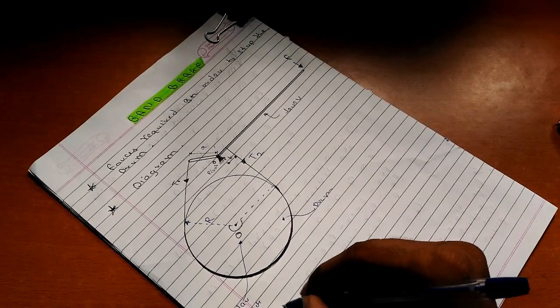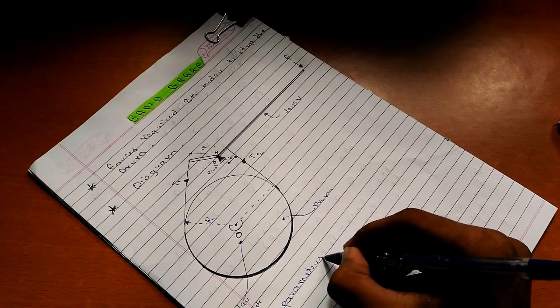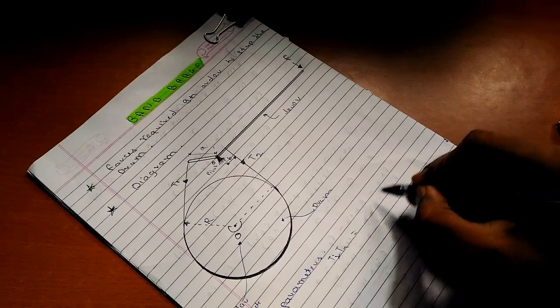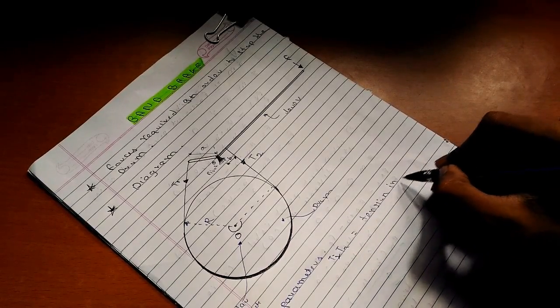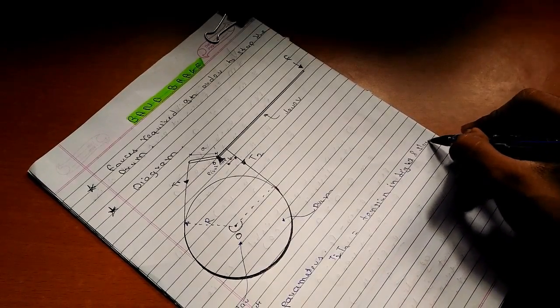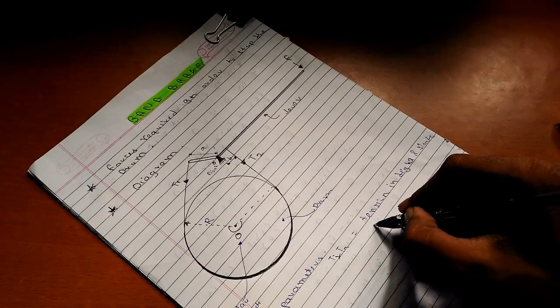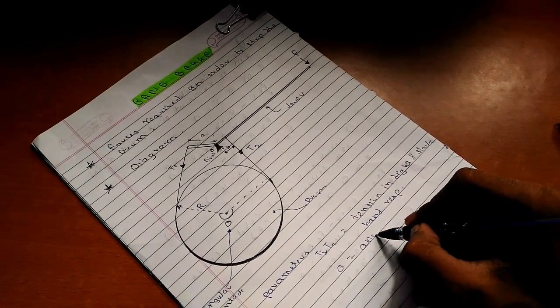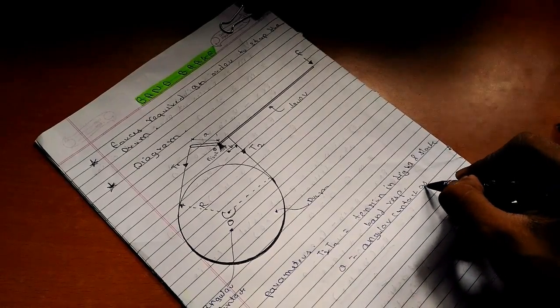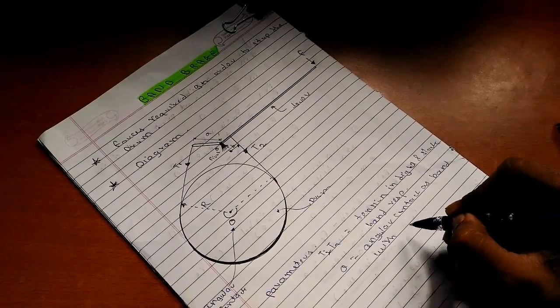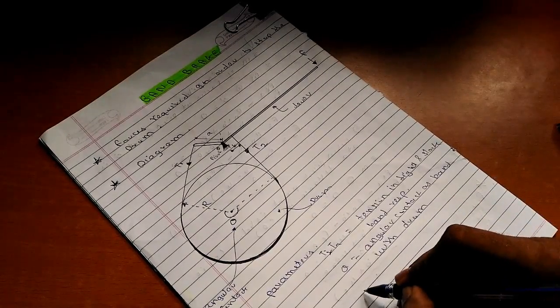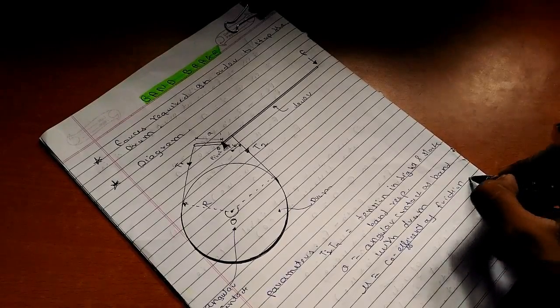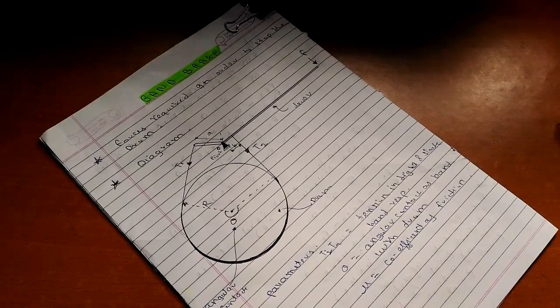Now let us draw the various parameters such as T1 and T2 as tension in tight and slack band respectively. Theta is the angular contact of band with drum. Mu is the coefficient of friction between the band and the drum.